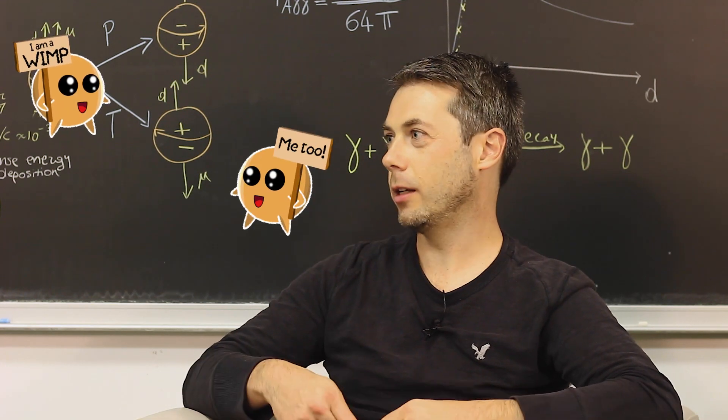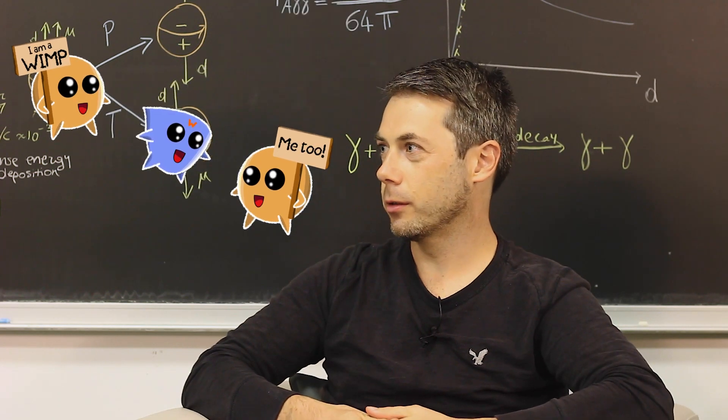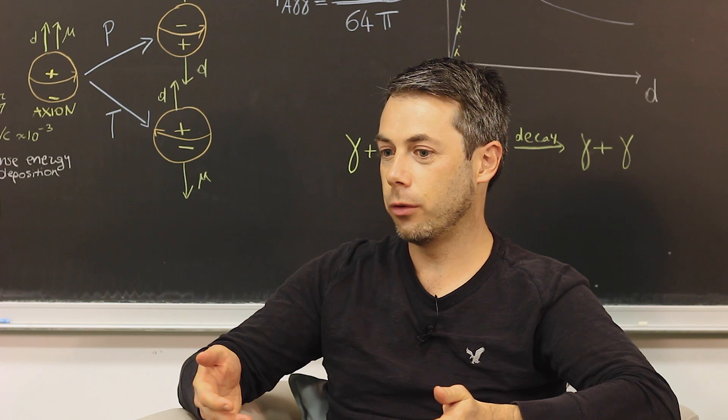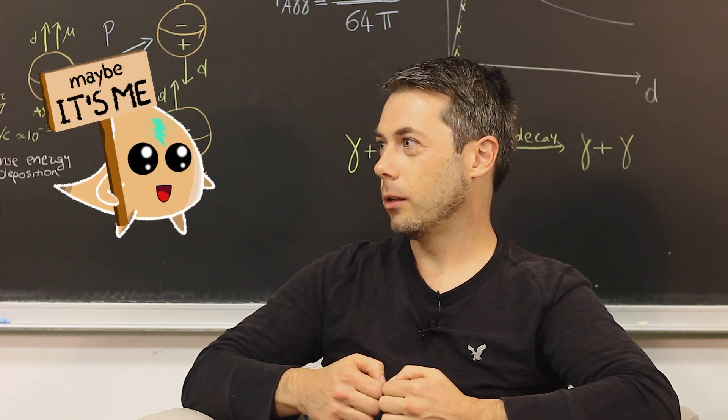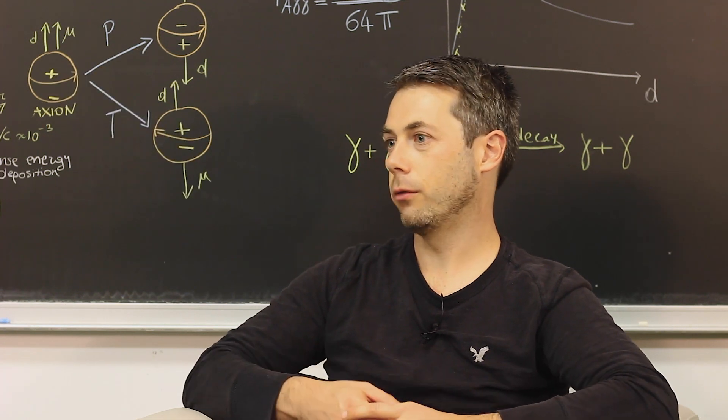WIMPs, as their name indicates, are interacting via a weak force. So a perfect candidate for that matter would be a new species of neutrino, because they are interacting via the weak nuclear force.